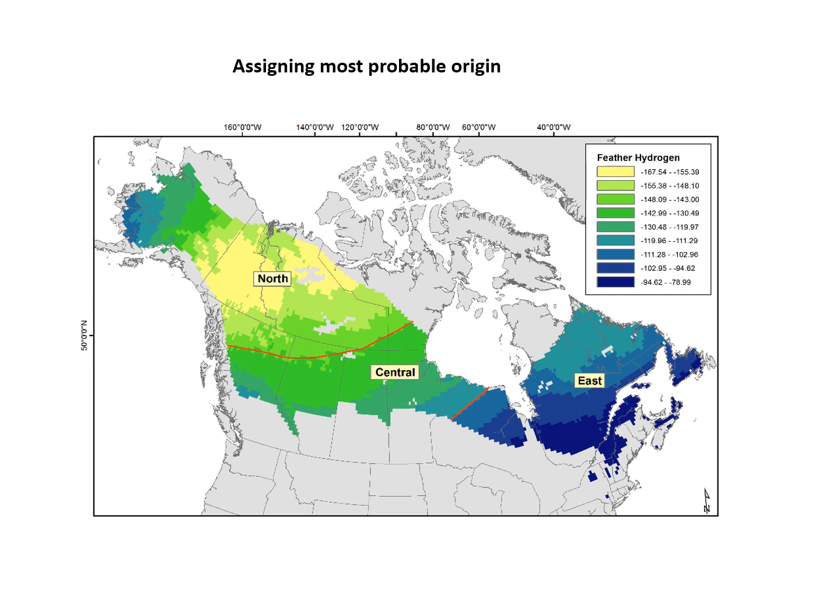The first step in putting the isotope data together was to divide the breeding range into isotopic zones. The east — mainly the blue area from Ontario eastward — is fairly distinctive, and if you have a bird with that signature you're pretty sure it came from the east, aside from the Alaska issue which I've discussed.